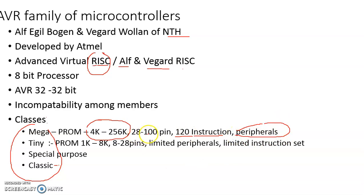The Mega class has a very extensive set of peripherals as well. Generally the number of pins depends on the number of input/output devices or peripherals incorporated with the microcontroller. There are AVR microcontrollers having pins from 28 upward in the Mega class. The Mega class of the AVR family of microcontrollers incorporates input, output, devices, and peripherals.